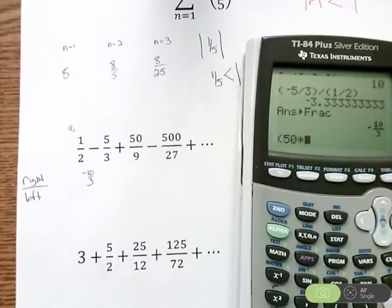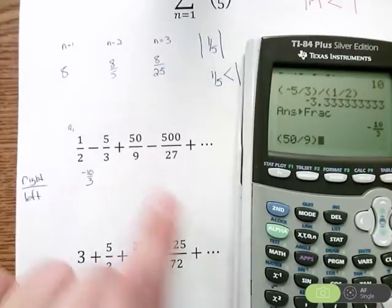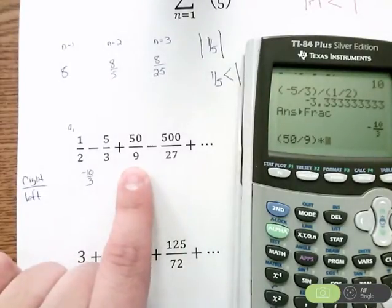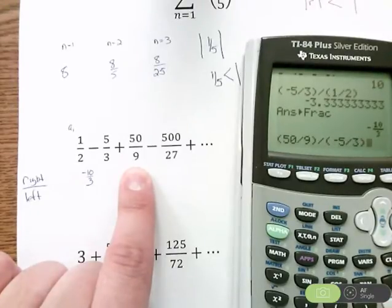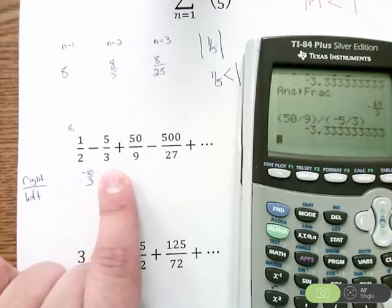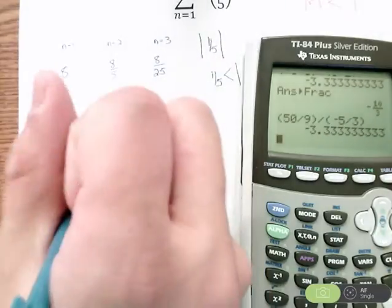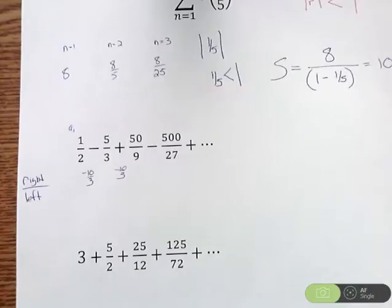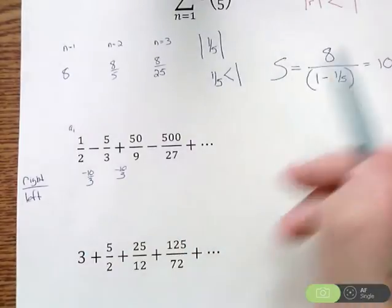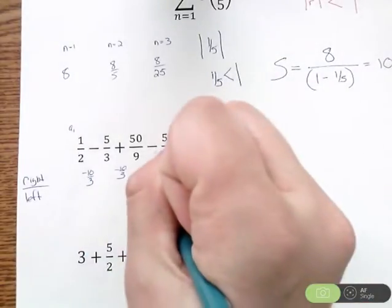I want to check another one just to make sure my R is correct. 50/9 divided by negative 5/3, right divided by left. I get negative 3.33 again, which is negative 10/3. So to use the formula, I've got A1 and R, but we have to check R.